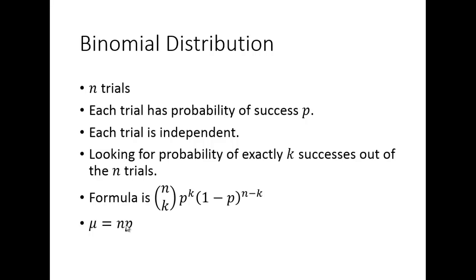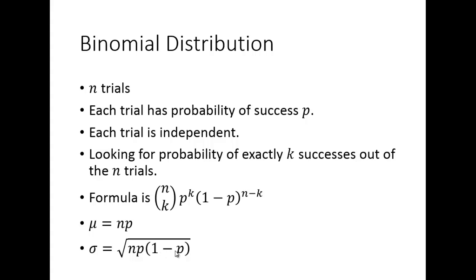So if p is one-third, the expected number of heads is one-third of the number of flips — that's intuitive. The standard deviation is the square root of n times p times 1 minus p, sometimes written as the square root of n times p times q.